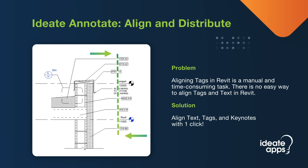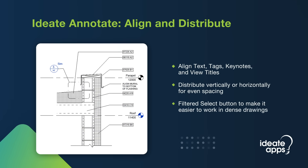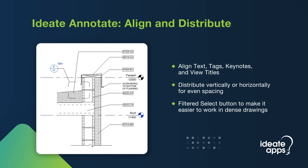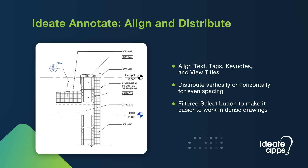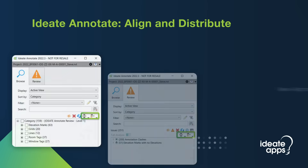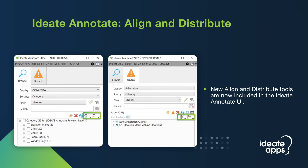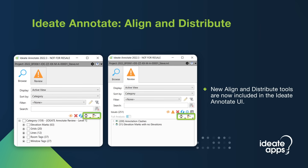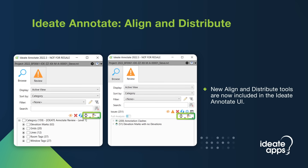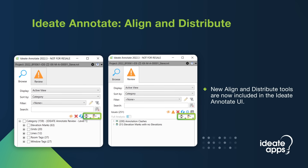With the latest update to IDEA Annotate, we now have the ability to align text and tags and distribute tags evenly. The align and distribute tools can be found in the IDEA Annotate UI on both the Review and Browse tabs.